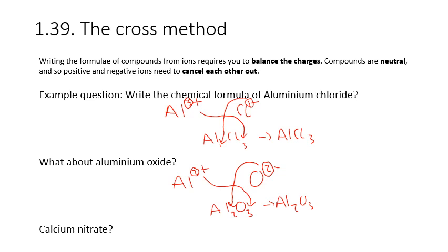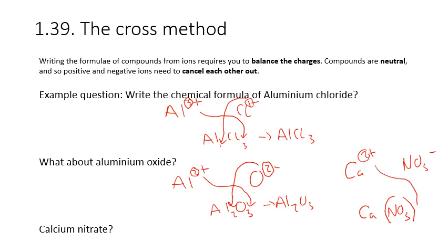Now try calcium nitrate. Calcium is a 2+ ion and the nitrate ion is 1−. If we need more than one nitrate ion, we put it in brackets. Write Ca and NO₃ in brackets next to each other. Put the 2 from calcium after the nitrate bracket, and the 1 from nitrate after the calcium — giving Ca(NO₃)₂, because we need two nitrate ions with a 1− charge to balance the 2+ charge on the calcium.